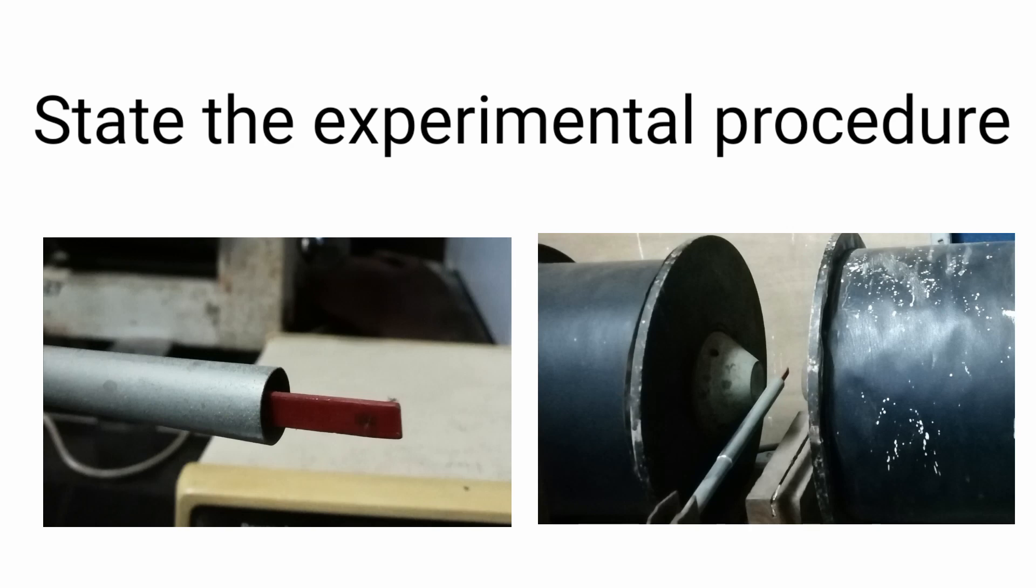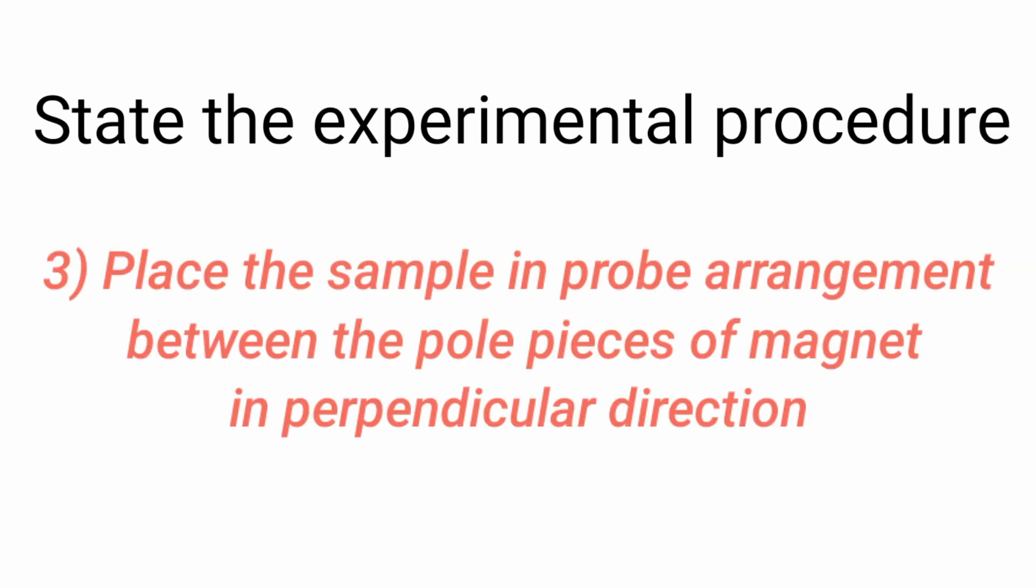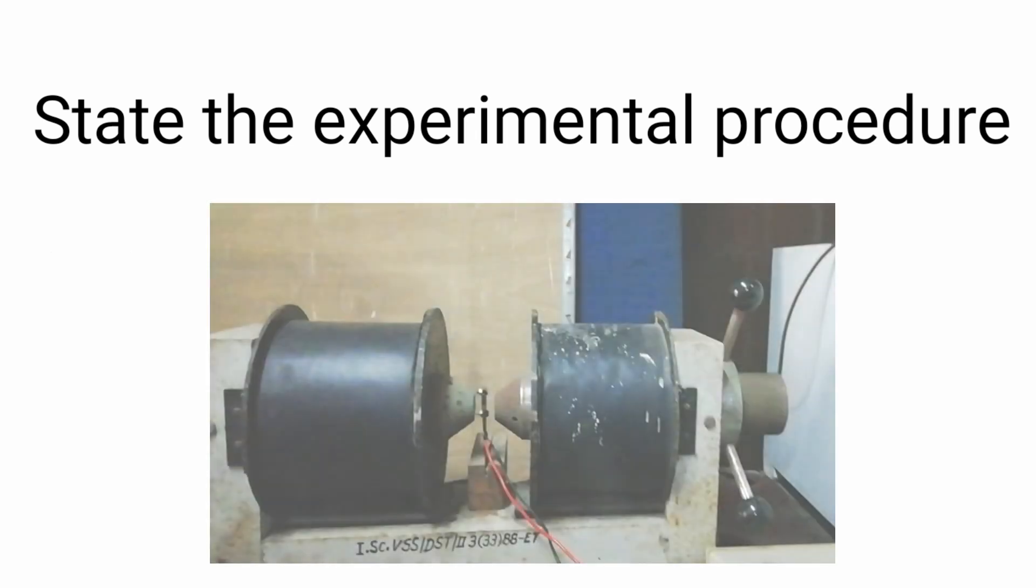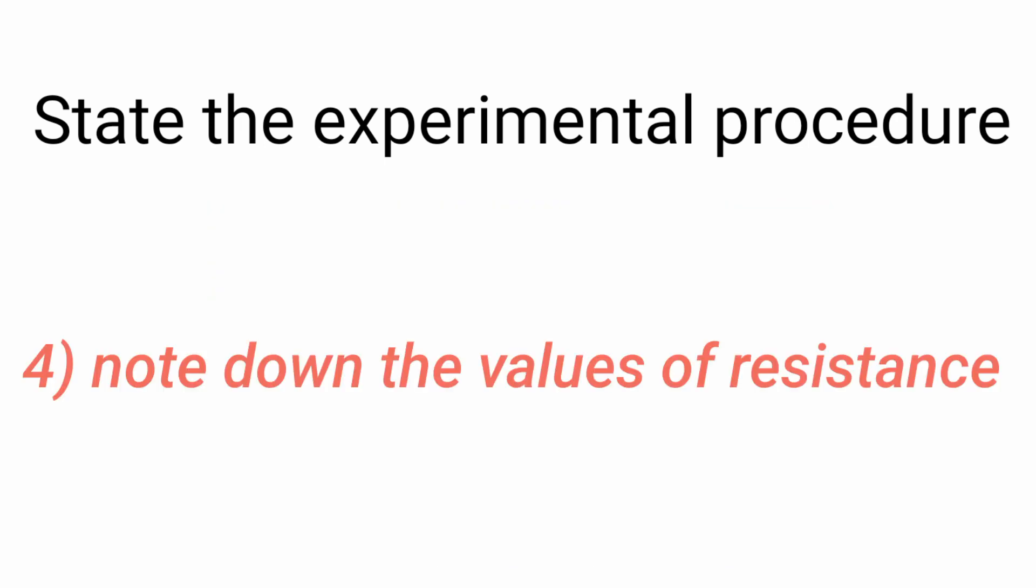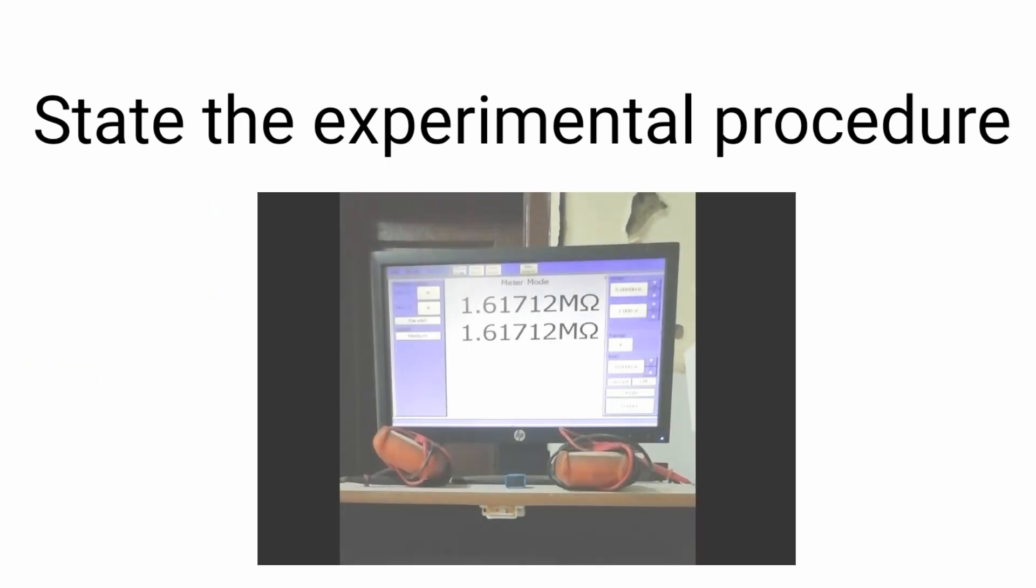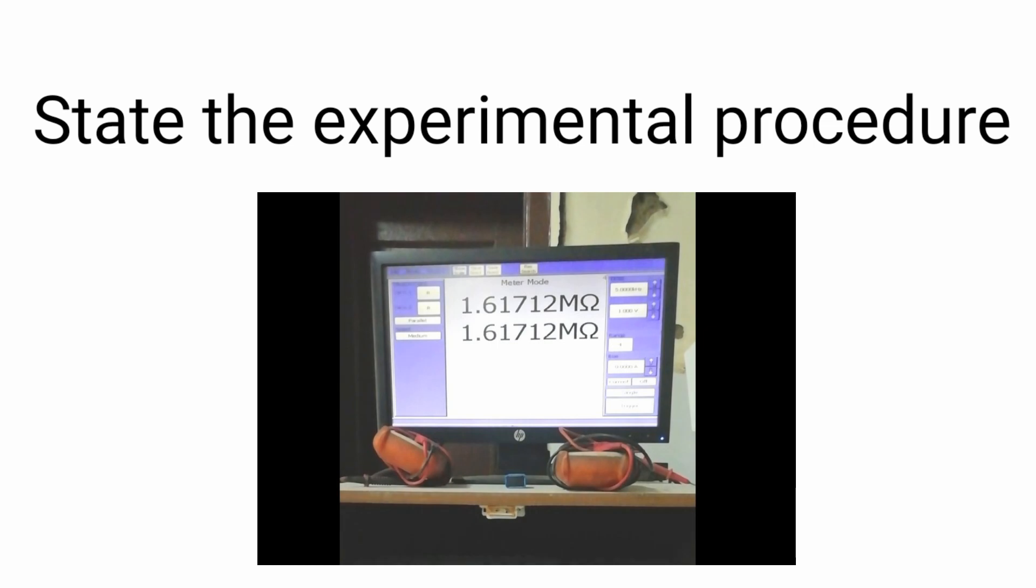This will finish the calibration part. Now you need to place the sample in the 4 probe arrangement and put it between the pole pieces of the magnet in a perpendicular direction. Note down the values of the resistance or either you can go with the values of voltage and current and then calculate resistance.